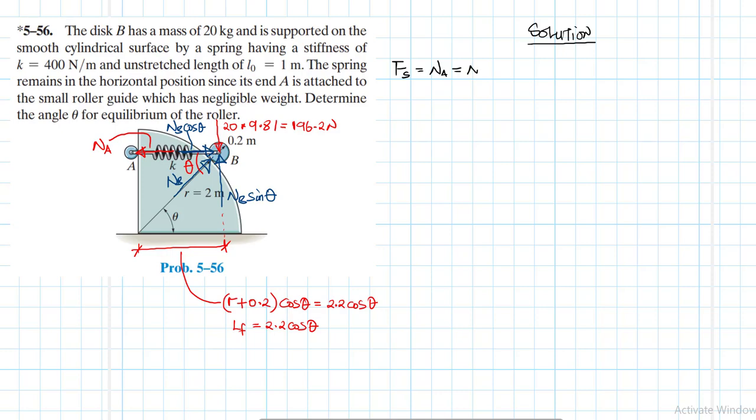This spring force is going to be equal to the normal force at A which is NA. It is also going to be equal to the component in the horizontal direction coming from NB which is NB cos theta. This is going to be equal to k times s.